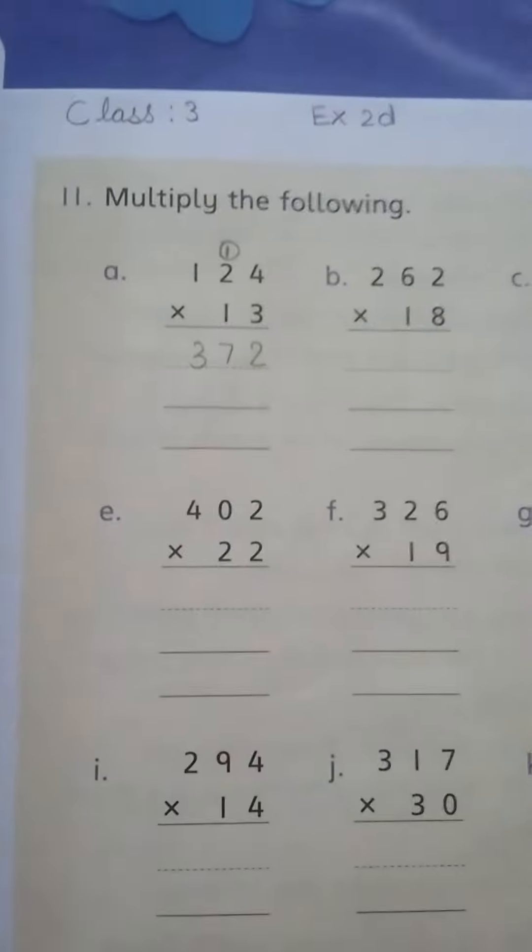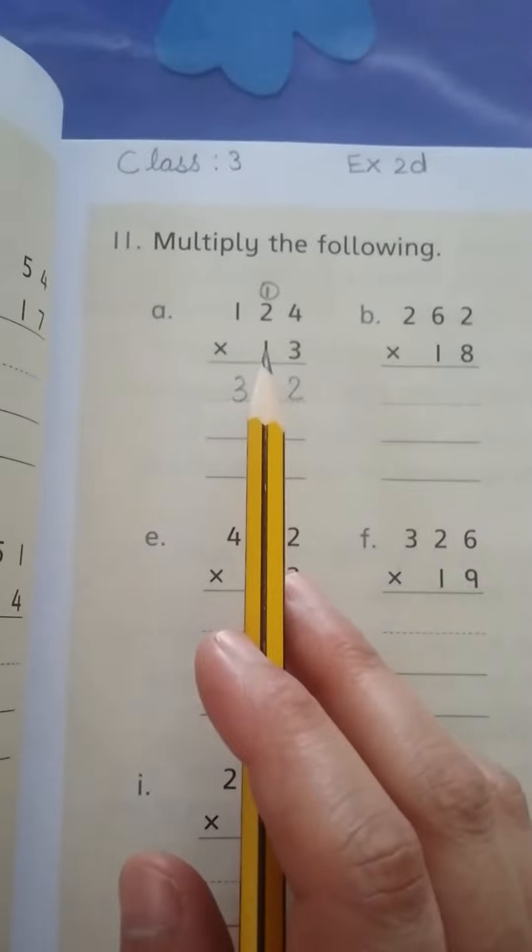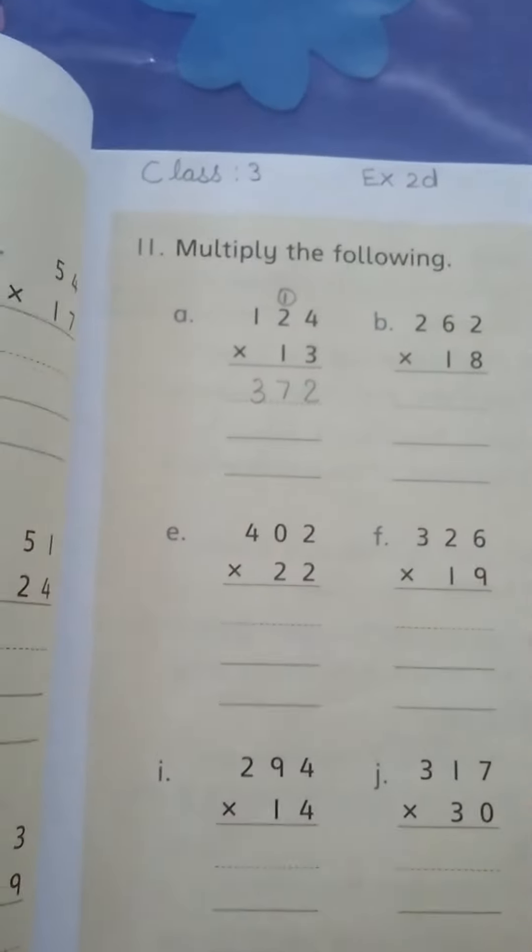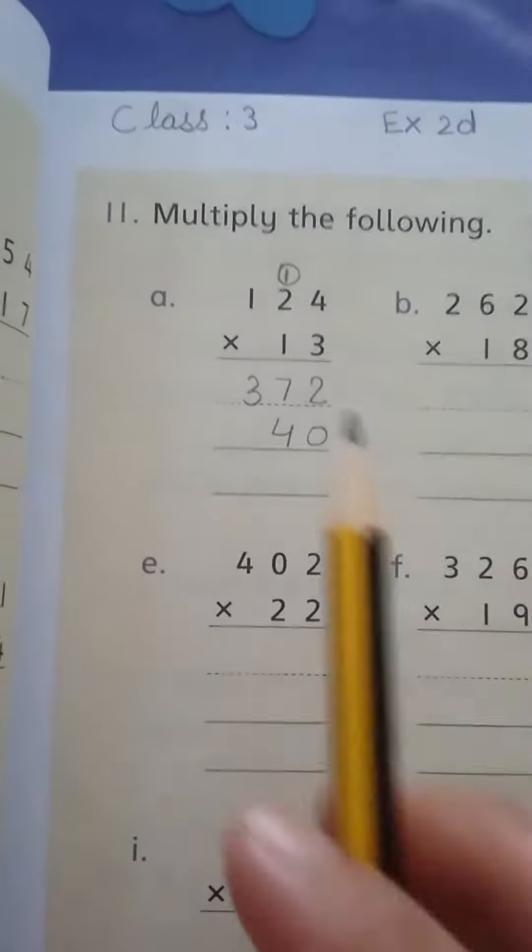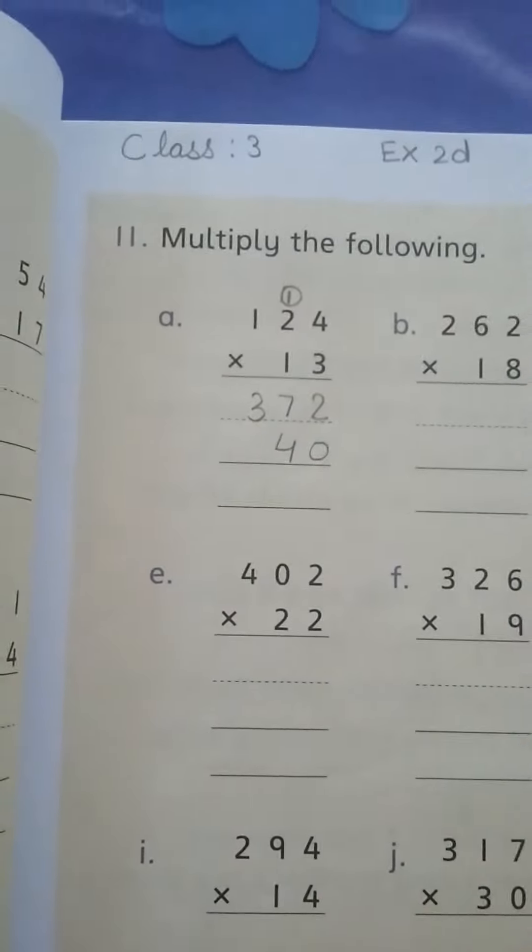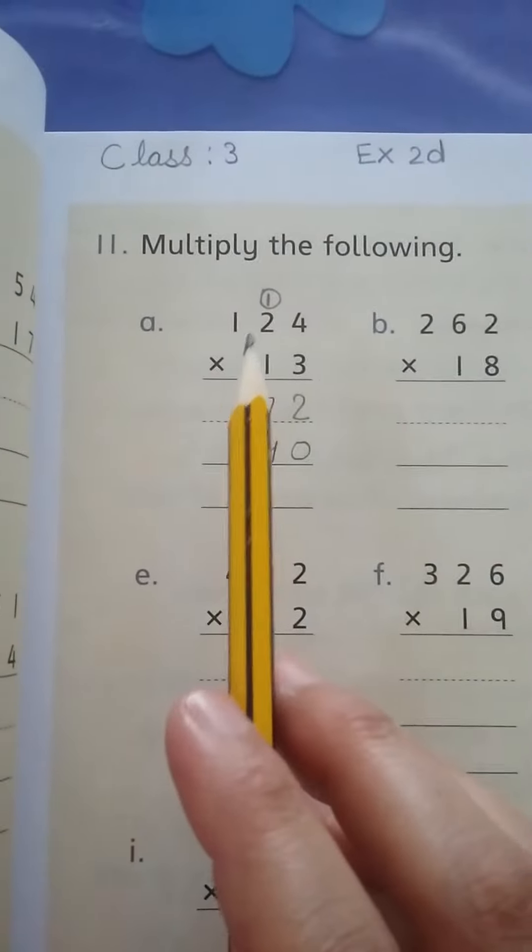Now we will do this with tens. One fours are four, one twos are two, one ones are one.